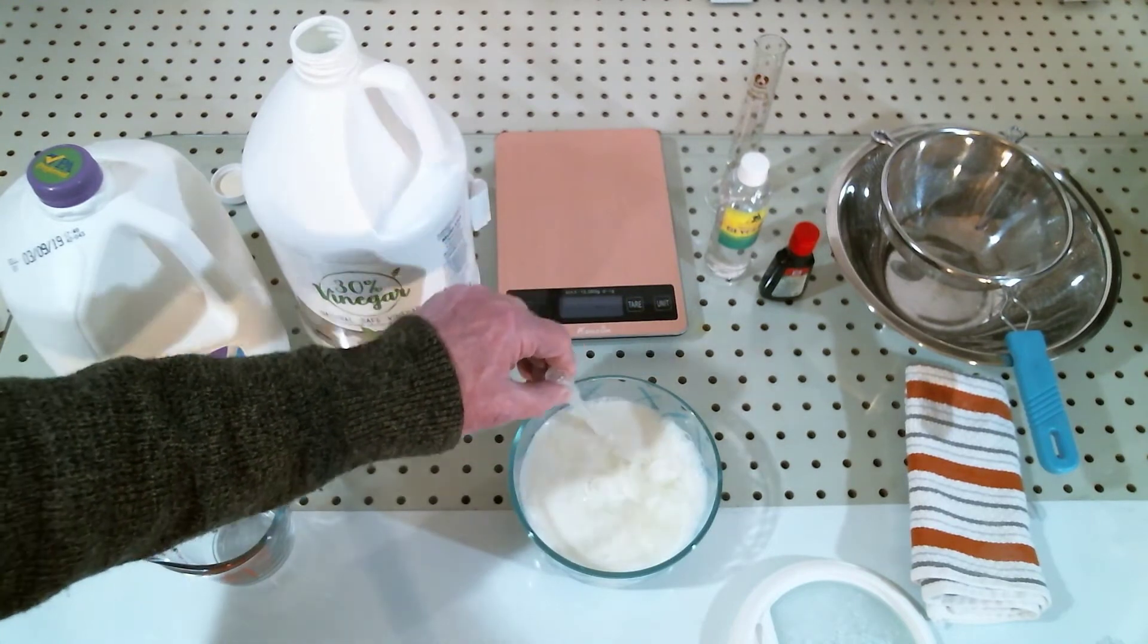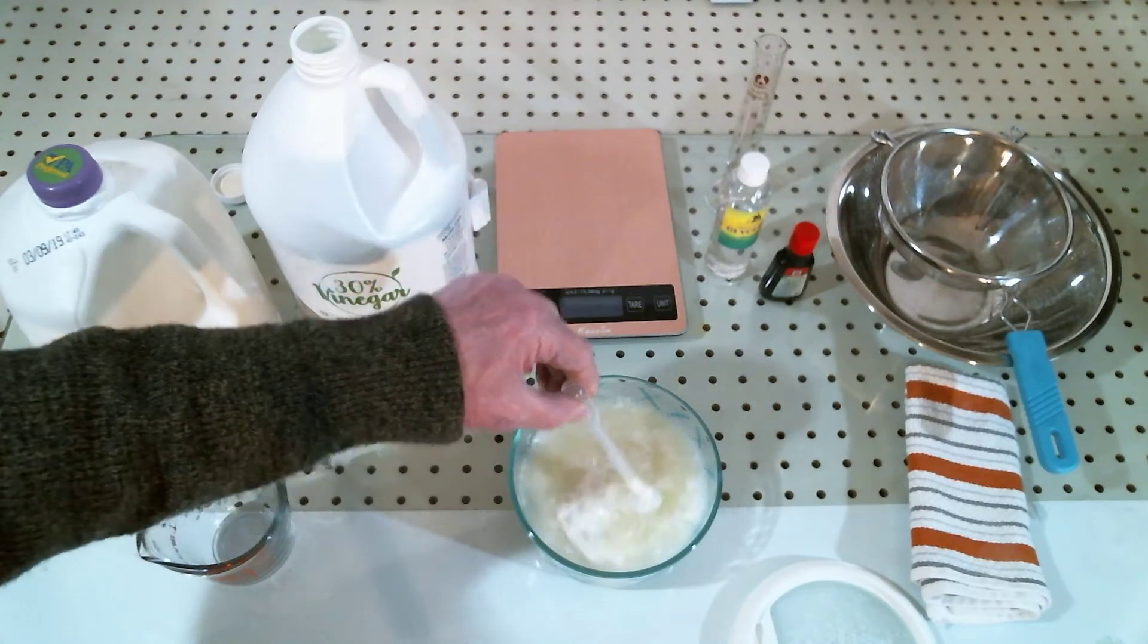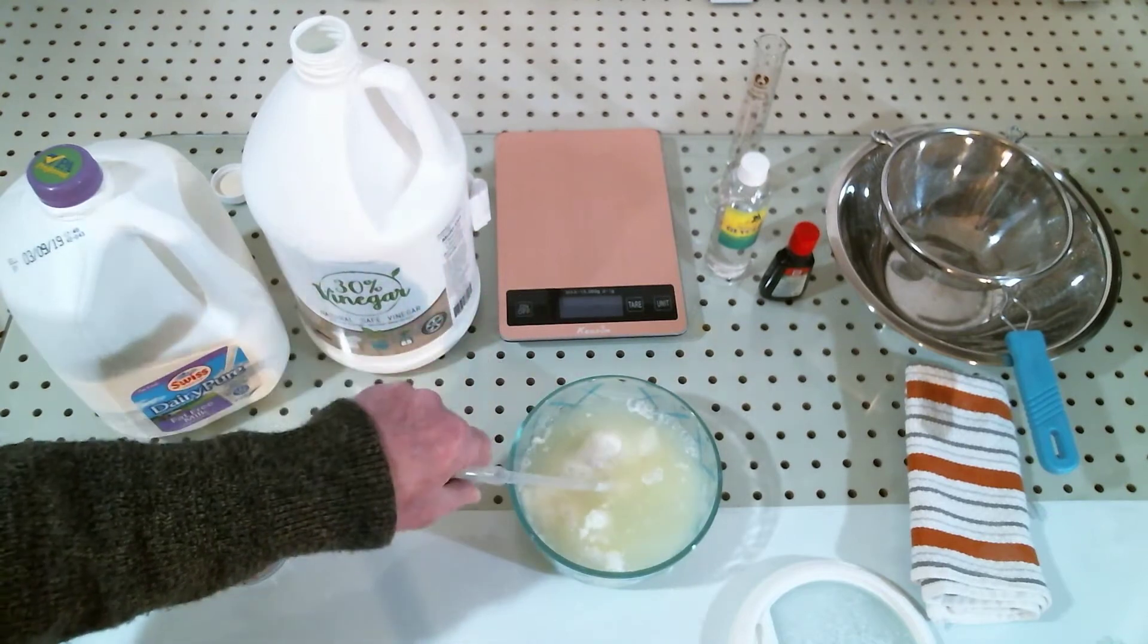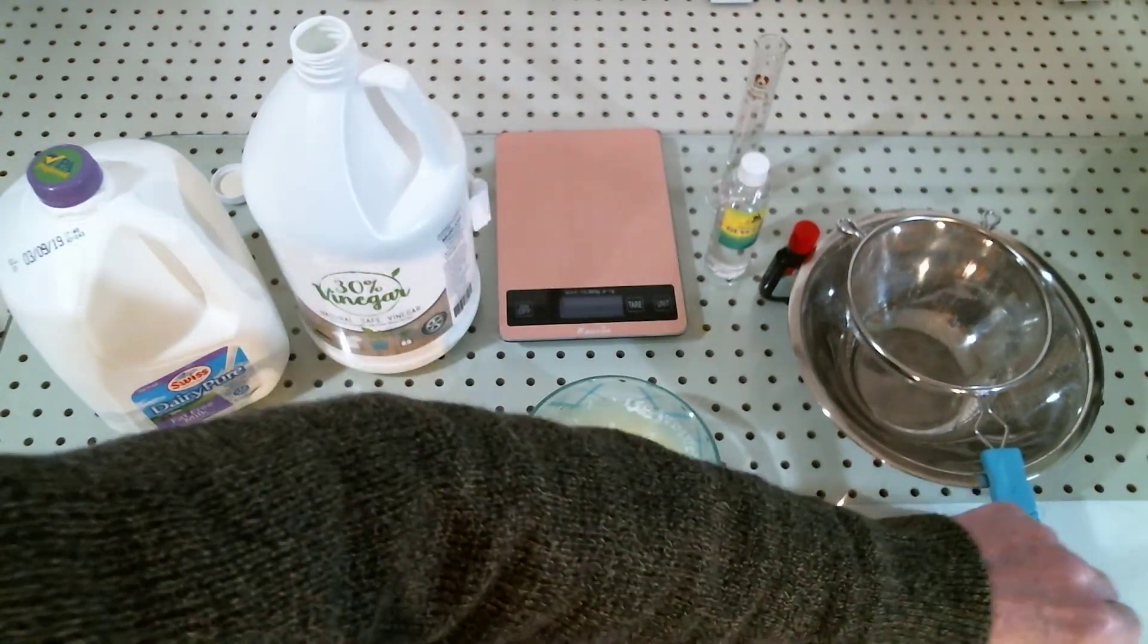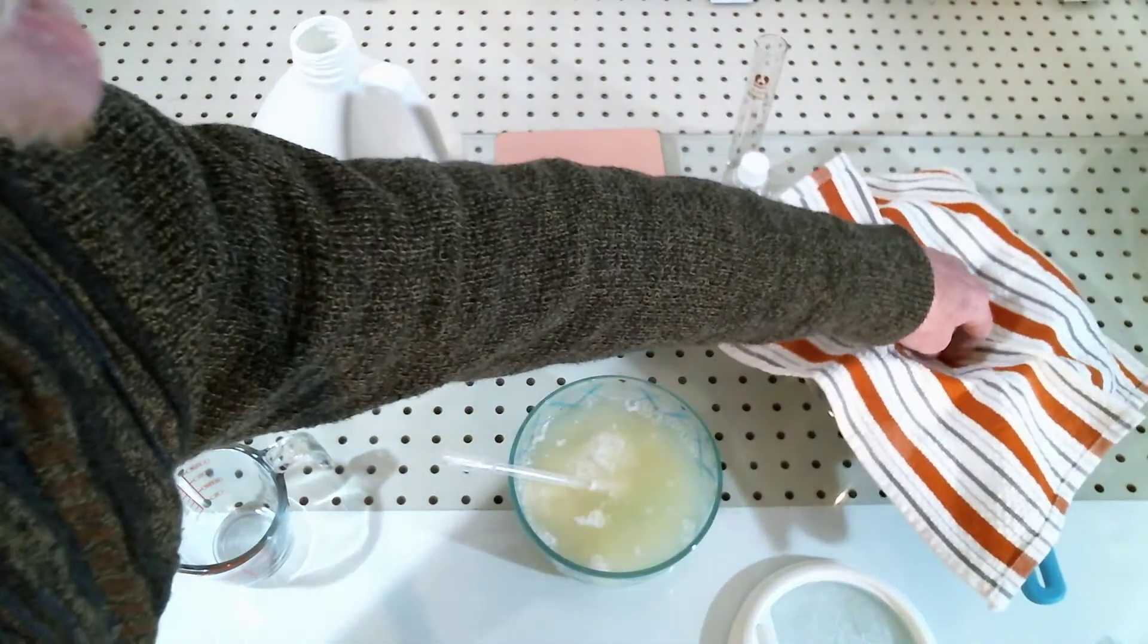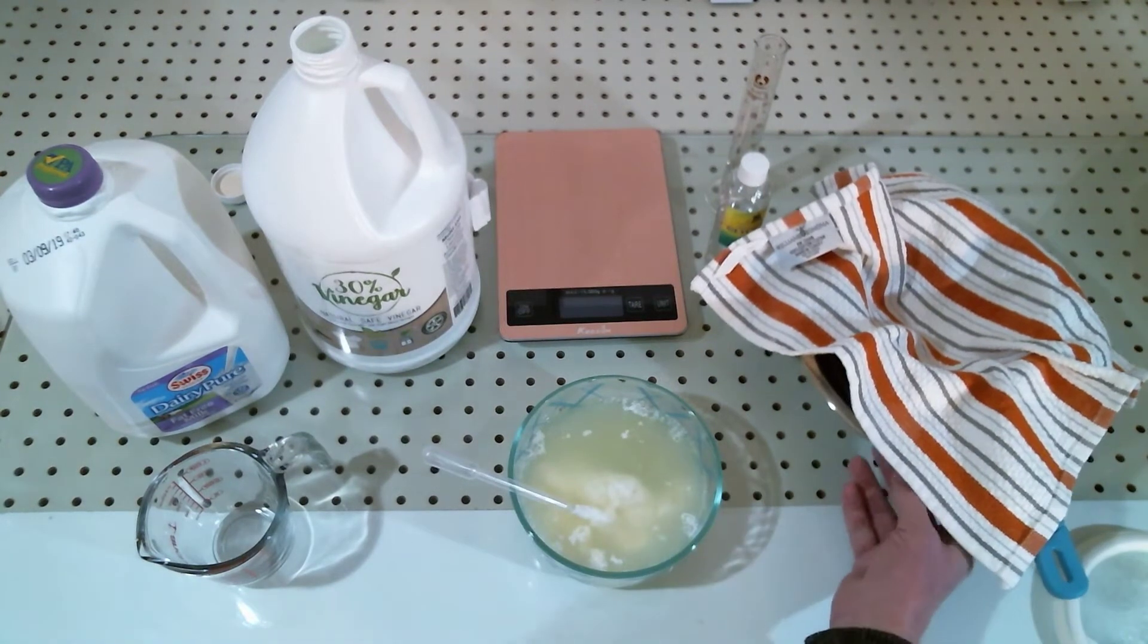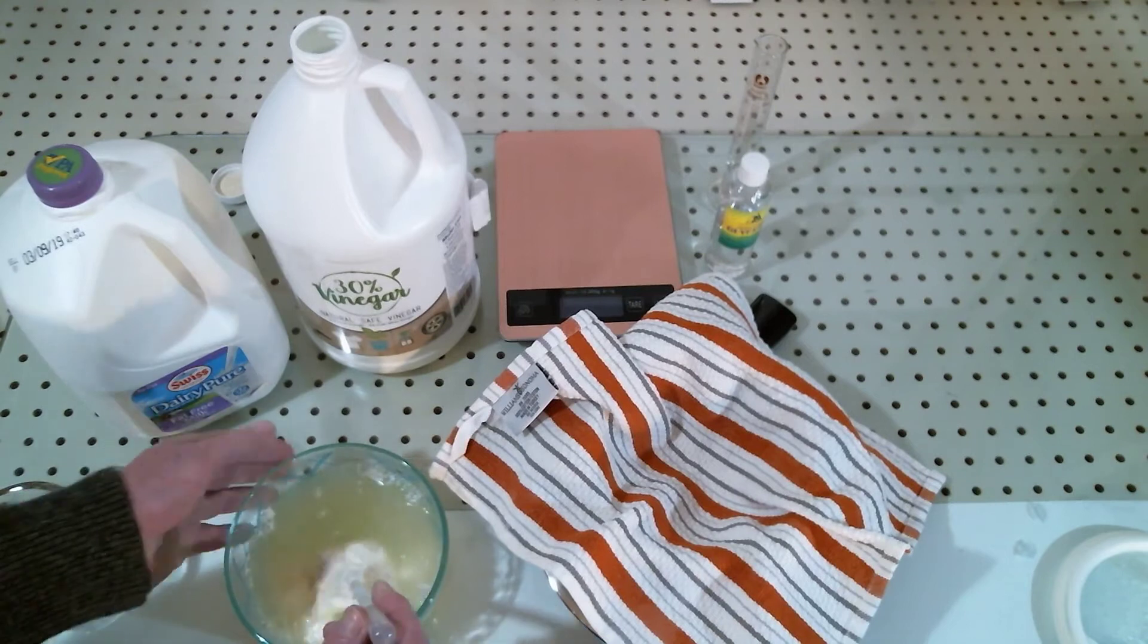Just keep stirring until all of the casein precipitates out of the milk. What you have left are just big chunks of casein and the yellow liquid is the whey. Now we're going to separate this in a strainer. We're going to pour it off into this, and we can just use a regular towel like a kitchen towel or anything that you may have handy.